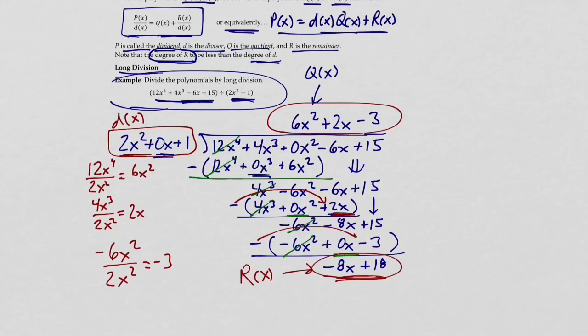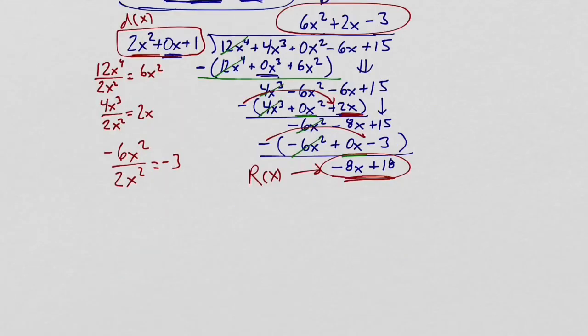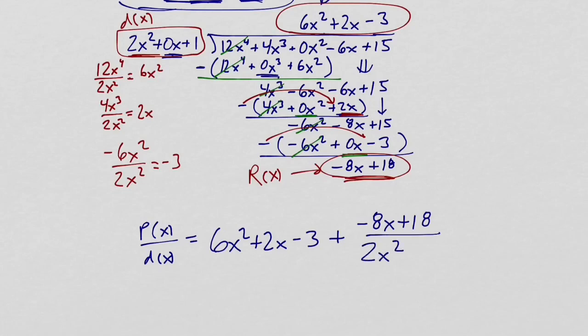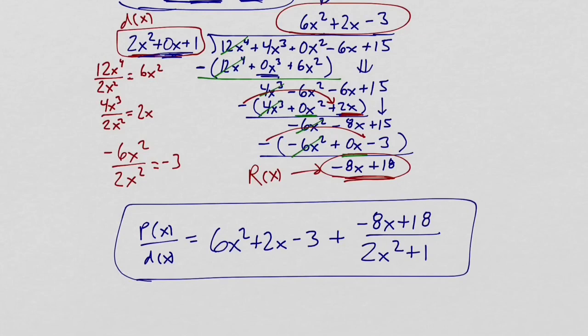So let's put together our final answer in one of the forms that I described initially. Let's use this form here. So we want P(x) over D(x) to be equal to Q(x) plus R(x) over D(x). And so let me write out this part of our expression. For this particular problem, Q(x) is 6x² + 2x - 3. And I want to add to that R(x), negative 8x + 18 divided by D(x), 2x² + 1. And that's it. That's the final answer for our division problem.